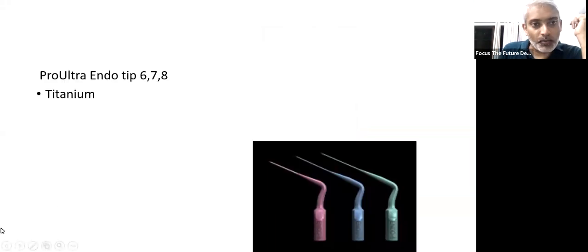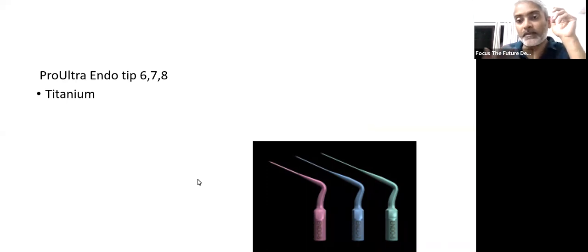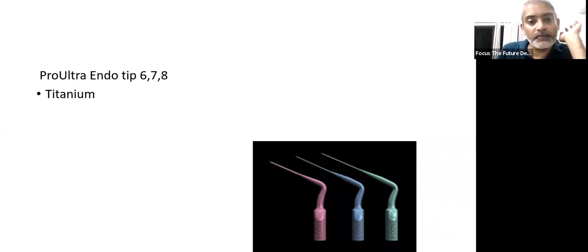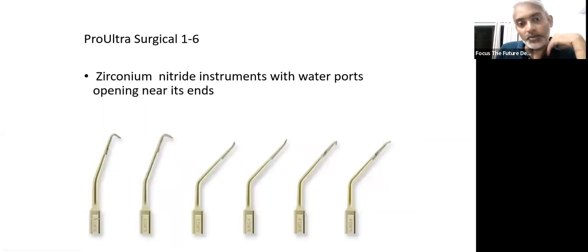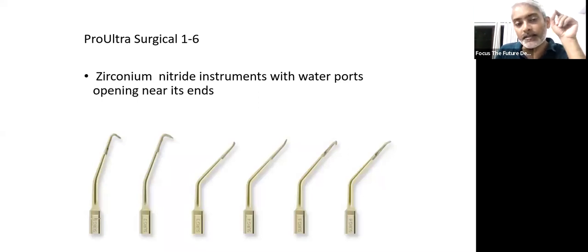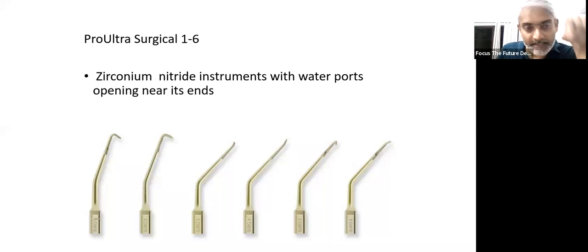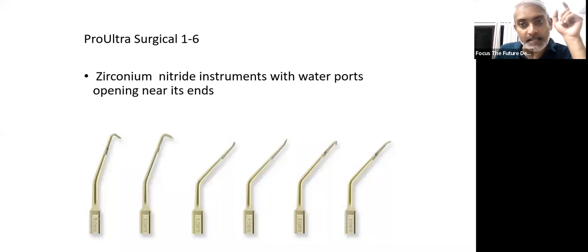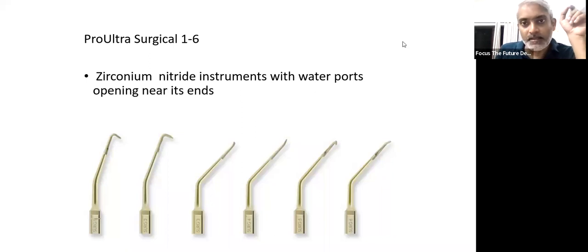You also have Pro-Ultra endodontic 6, 7, and 8, which are a bit different from the other Pro-Ultra tips. This is something you need to know and remember for your exams. You also have certain surgical tips from Pro-Ultra. These surgical tips are named 1 to 6 depending upon the purpose. These are all zirconium nitride instruments, and they are used for retro preparation and other surgical purposes. When we do an apicectomy, these tips are used specifically for that.